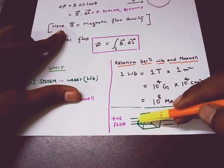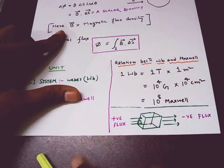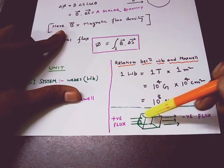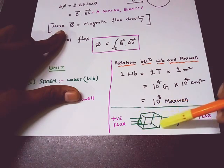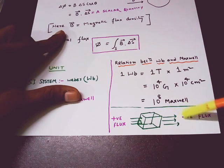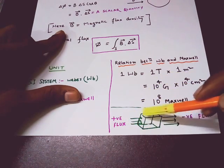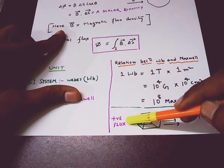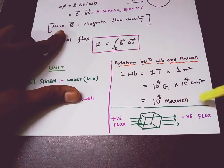Now suppose there is a surface — as you see in the figure, there is a box and some magnetic field lines going from left to right, also passing inside the box. The left side of the box has flux going inward and the right side has flux going outward. The convention is: if the flux is going inside the surface, that flux is denoted as positive flux; and if it is coming out of the surface, that flux is known as negative flux.